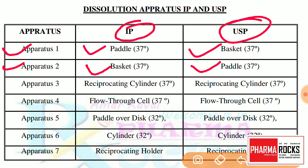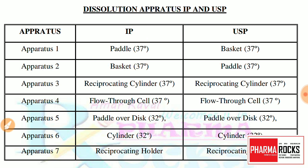So here there is a cross — the paddle is here and the baskets are here as per the USP and IP. In the IP the first one is the paddle, and in the USP the first one is the basket. In apparatus 2, as per the IP it is the basket type, and as per the USP it is the paddle type.